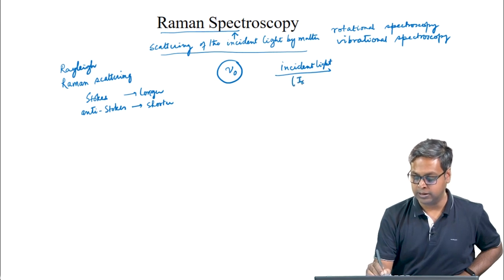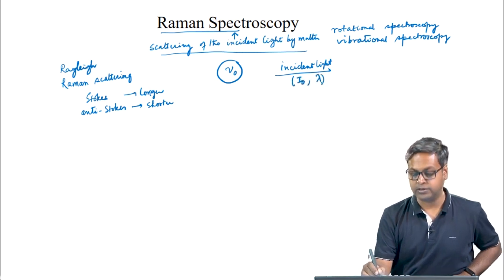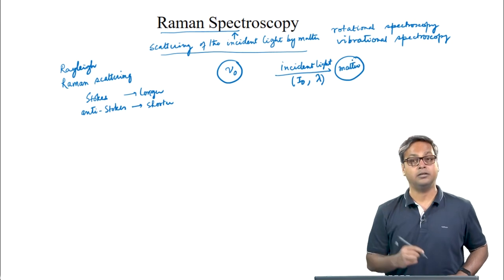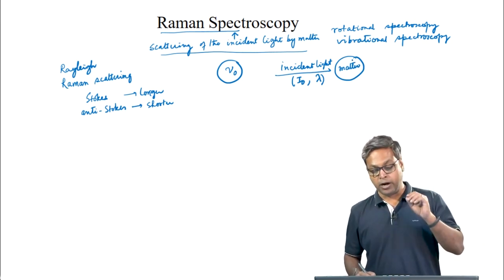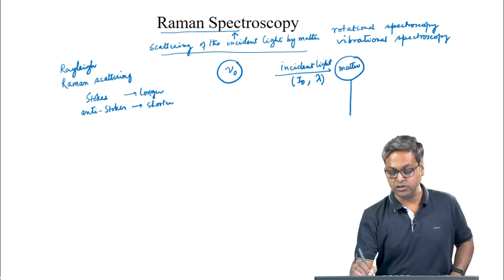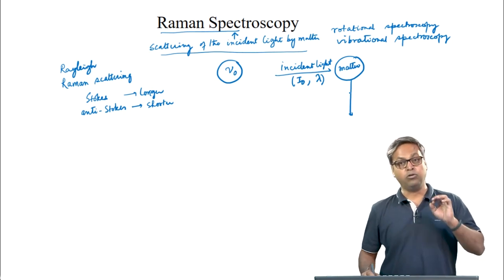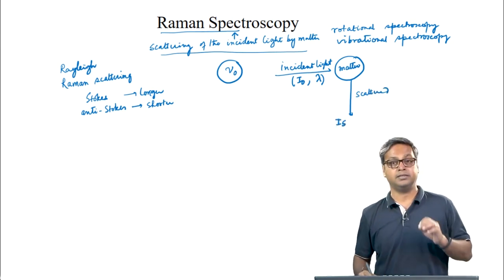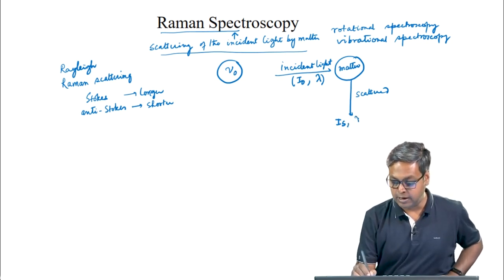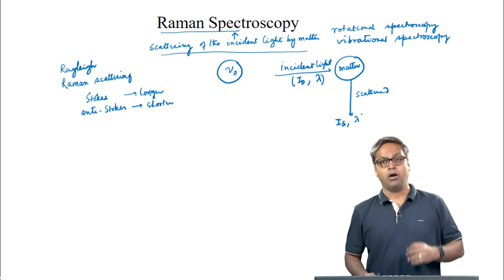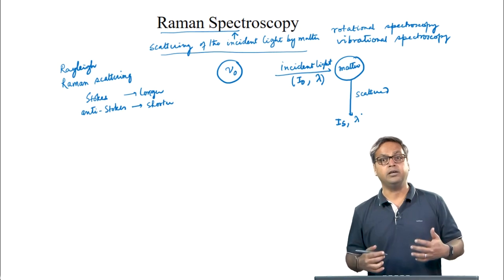In this case, we have the incident light with intensity I₀ and frequency lambda interacting with the molecule or matter. In this particular case of elastic scattering, there is a change of direction but no change of energy. For the scattered light, we can write Iₛ as the intensity and lambda as the wavelength. The change of direction of photons is known as scattering of the radiation.